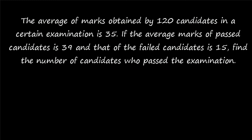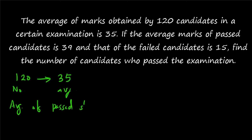So what is the given question? There are 120 candidates and the average of 120 candidates is 35. So 120 is the number of students and 35 is the average. Some of the students have passed and some have failed. The average of passed students is 39 and the average of failed students is 15. You have to find out the number of passed students.